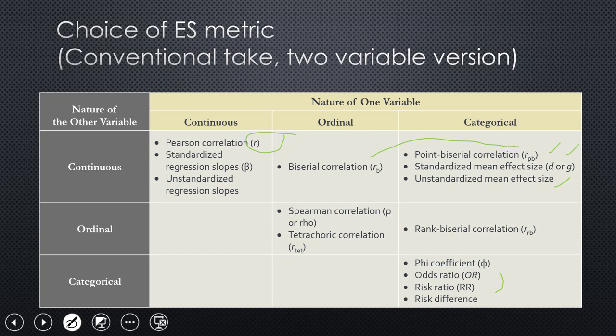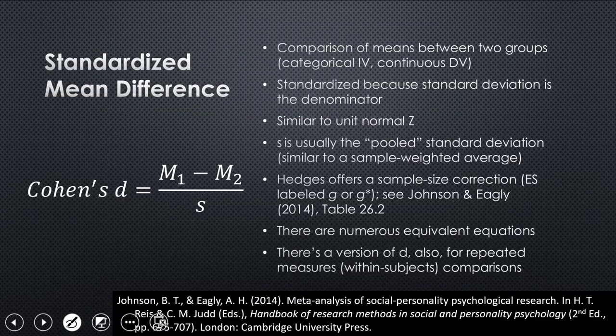And finally, these are not highly used. But if you've got two ordinal variables, the Spearman is in that category and tetrachoric is in that category. And rank biserial would be a categorical variable with an ordinal one. So these are what people are doing out there conventionally with meta-analysis. They're taking one of these effect sizes and using it in their analyses, standardizing across studies.